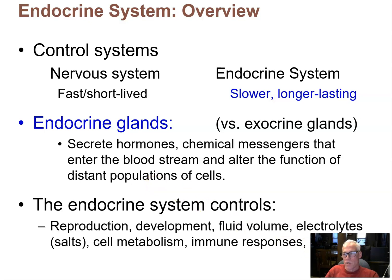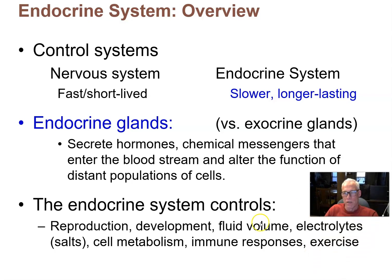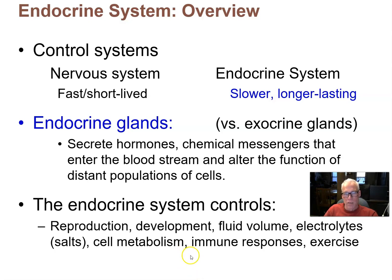The endocrine system has a pretty far-reaching effect on the body. Look at all these different systems and variables that are affected by or controlled by the endocrine system: reproduction, fertility, development, growth of the body throughout its processes, fluid volume, and electrolytes on a daily basis.